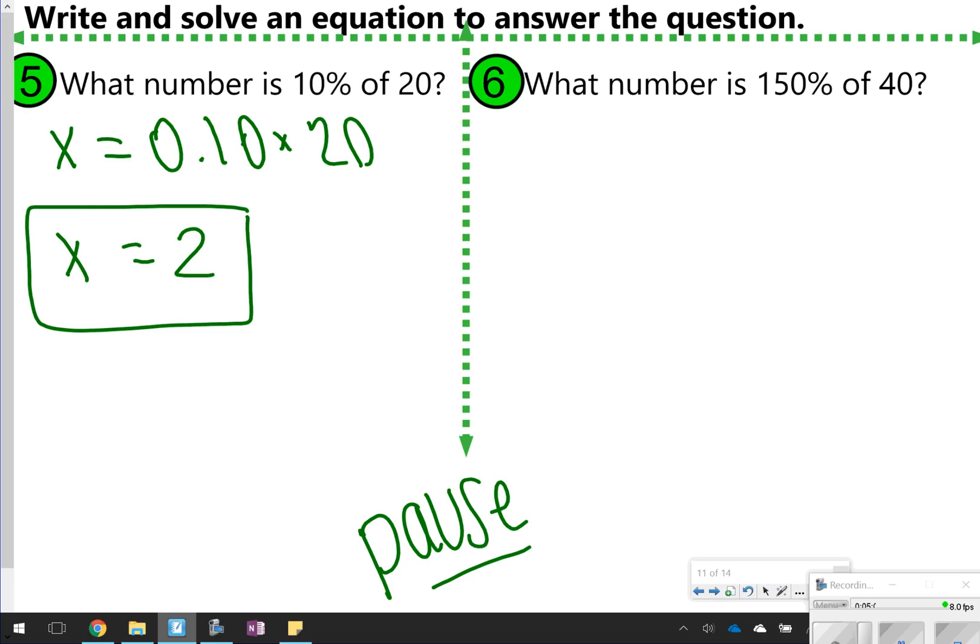Over here, what number is 150% of 40? Again, we don't know what is is. We do know the percent is 150% or 1.50 in decimal form, and then timesing that by 40, so 1.50 times 40 is 60, so x is equal to 60. Okay. Did we do okay on those?